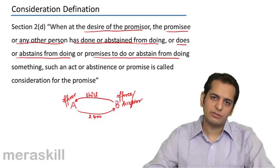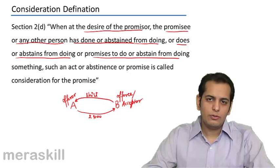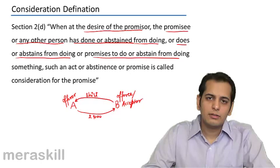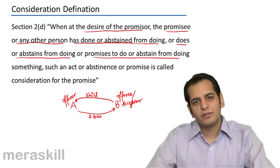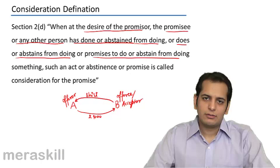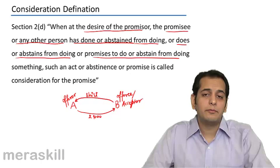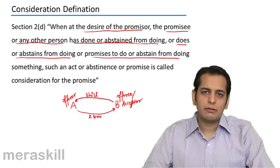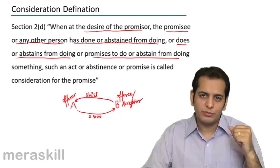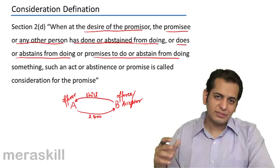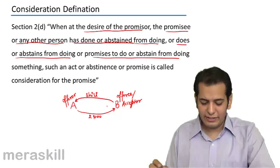Now, who is the promiser and who is the promisee in this case? A is the promiser and B is the promisee — it rhymes with offerer and offeree. But I would like you to revisit the definition of agreement. What is an agreement? An agreement is when there are a set of promises which form consideration for each other — a promise or a set of promises forming consideration for each other makes an agreement.